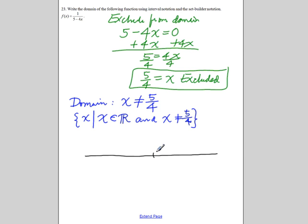The number line will show where the domain is. The domain can be any number except 5 over 4, so we put an open circle around 5 over 4.